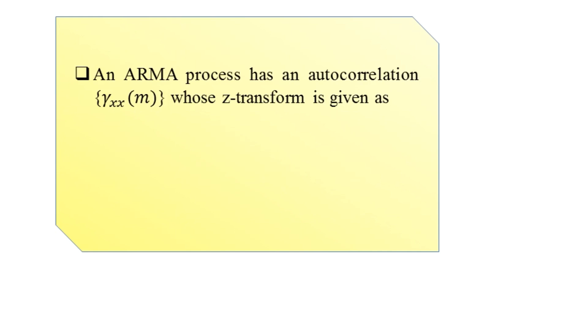The statement is: an ARMA process has an autocorrelation γ_xx(m) whose z-transform is given as Γ_xx(z) = 9 × [(z - 1/3)(z - 3)] / [(z - 1/2)(z - 2)]